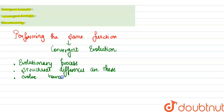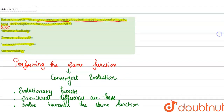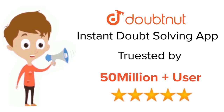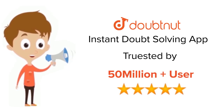This type of analogy is generally known as convergent evolution. In the question, bats and insects have no common ancestry and their structures are different, but they perform the same function — flight. So this adaptation for aerial life indicates convergent evolution. This is the correct answer. Thank you. For class 6 to 12, IIT JEE, and NEET level, trusted by more than 5 crore students — download Doubtnut today.